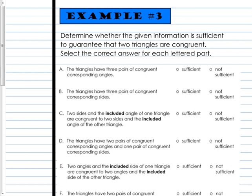Okay, example three. I'm going to do a couple with you and we'll finish them in class unless you want to go ahead and try to do them on your own. We're determining whether the given information is enough to guarantee that two triangles are congruent to each other. So select the correct answer for each letter part. Sometimes it's enough and sometimes it's not enough. It either has to be sufficient or not sufficient.